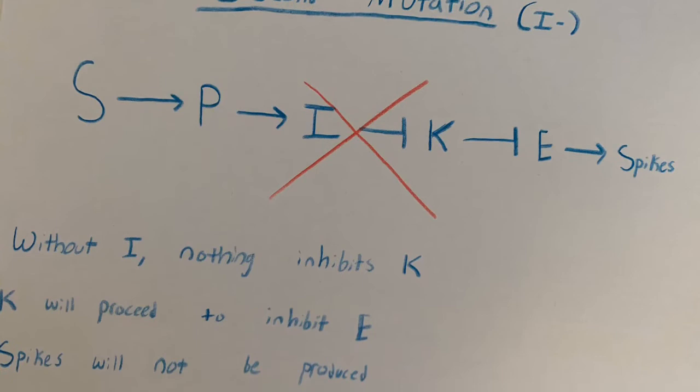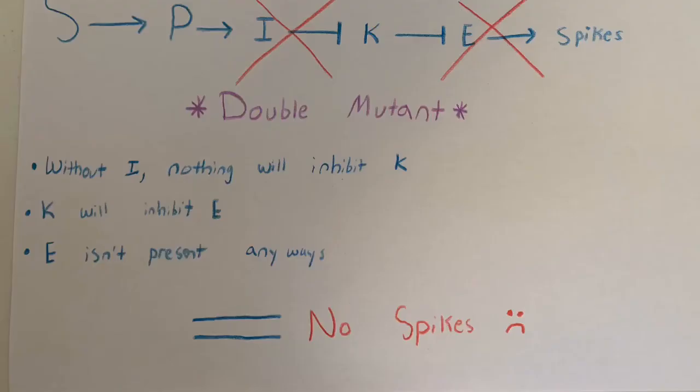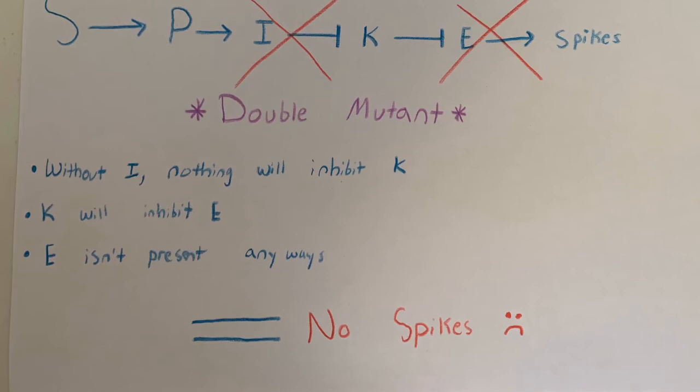In the second mutation, I- is the mutant. Without I, there's nothing to inhibit K. K will proceed to inhibit E, and spikes will not be produced again.